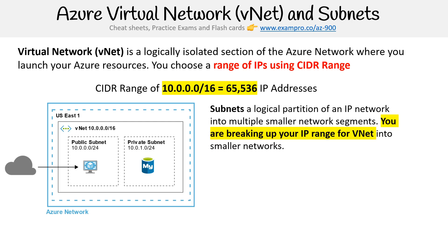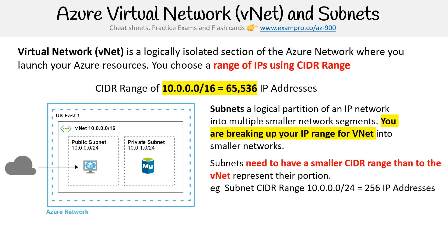We can subdivide our virtual network into subnets. A subnet is a logical partition of an IP network into smaller network segments — you're breaking it up into smaller IP ranges. When you create subnets, they have to be smaller than the VNet, so you have to define a CIDR range for them as well. Remember, the higher the number, the smaller the range. So /24 means just 256 IP addresses.